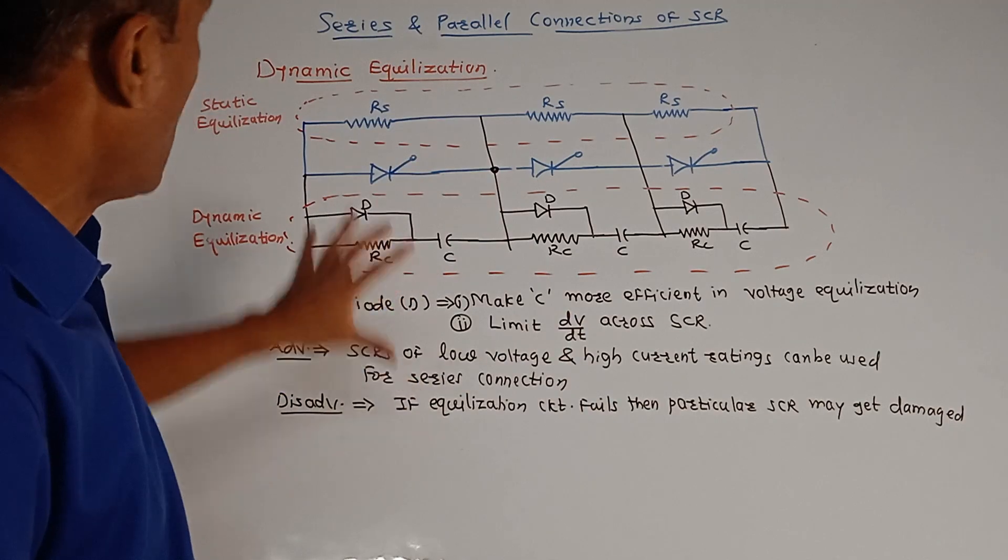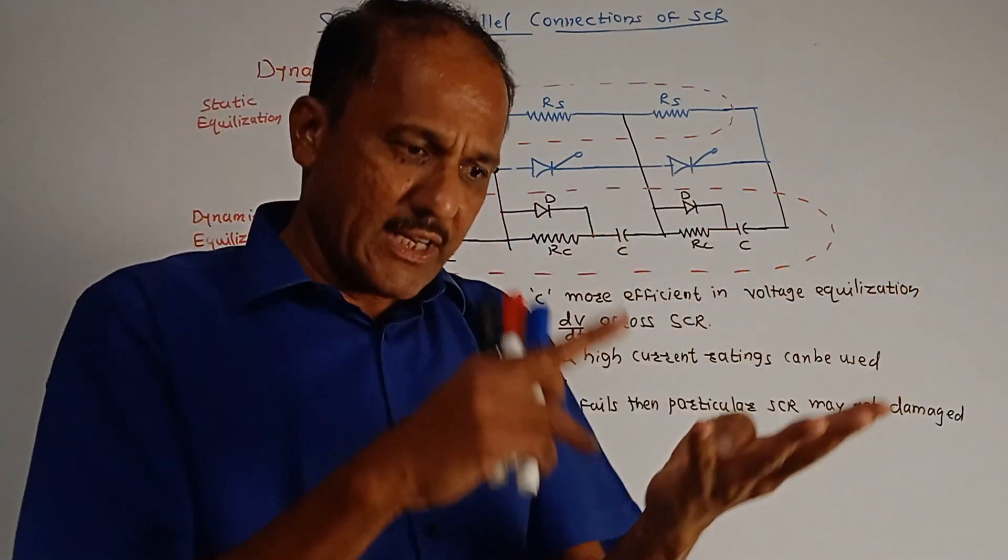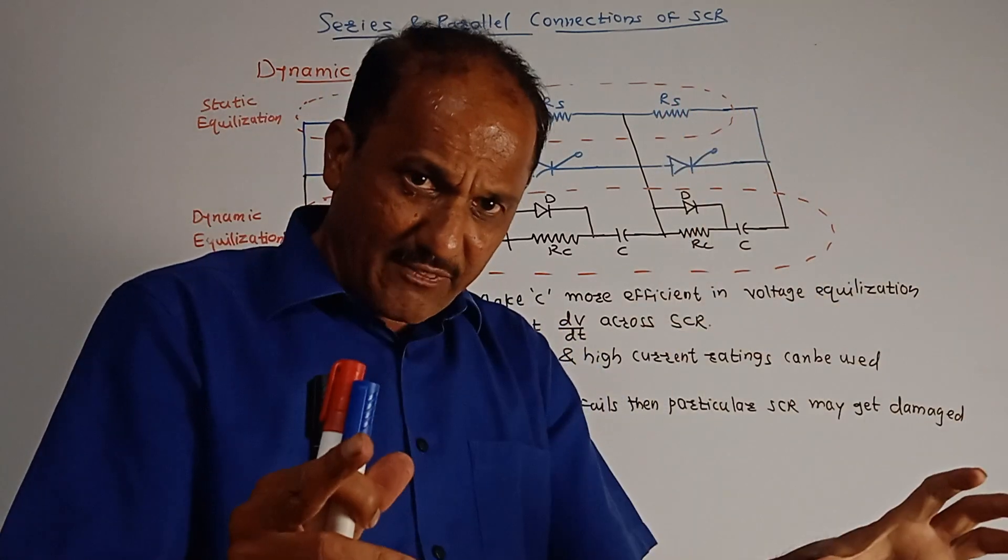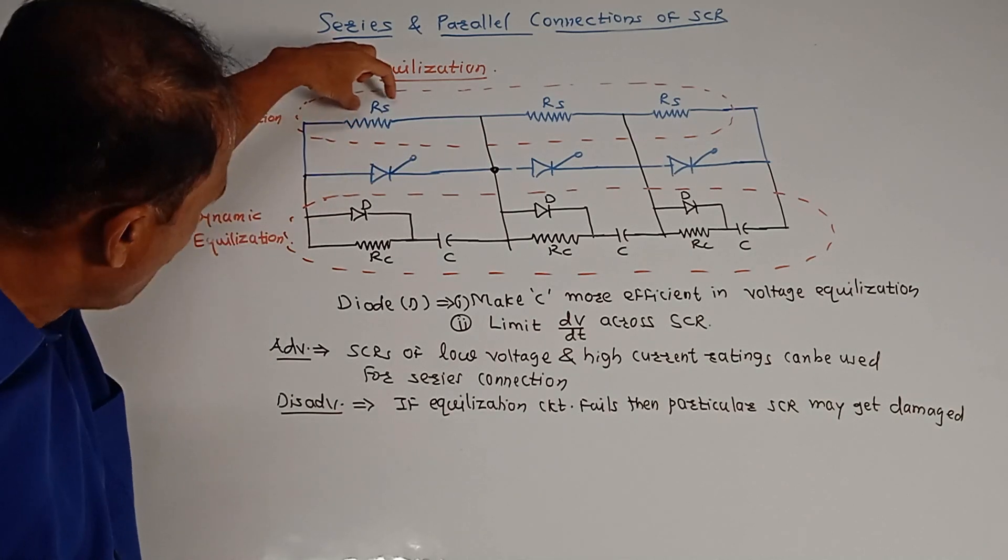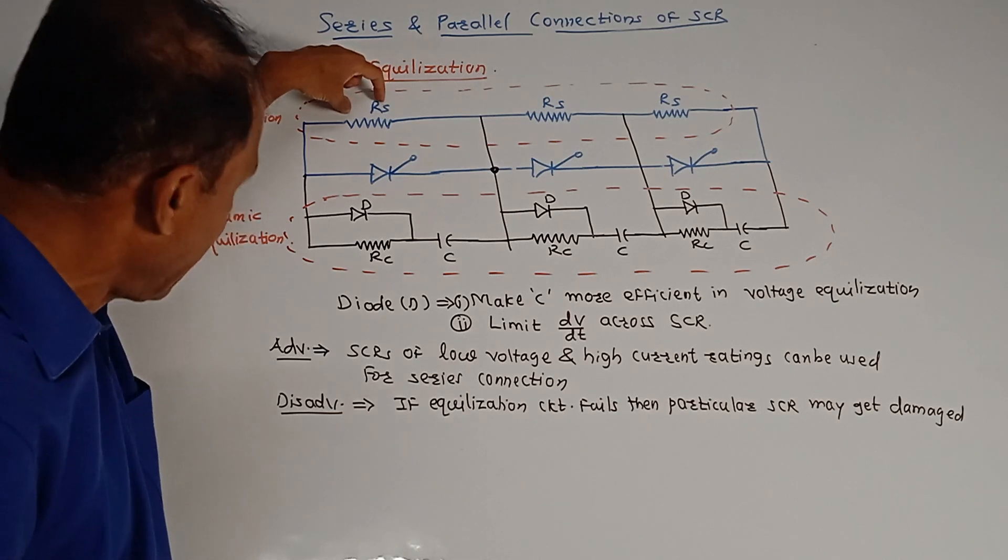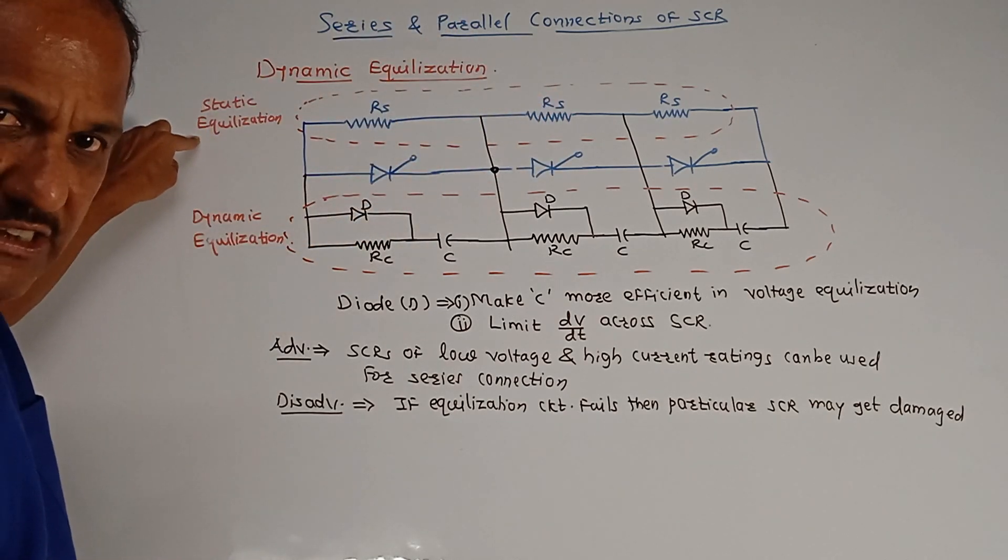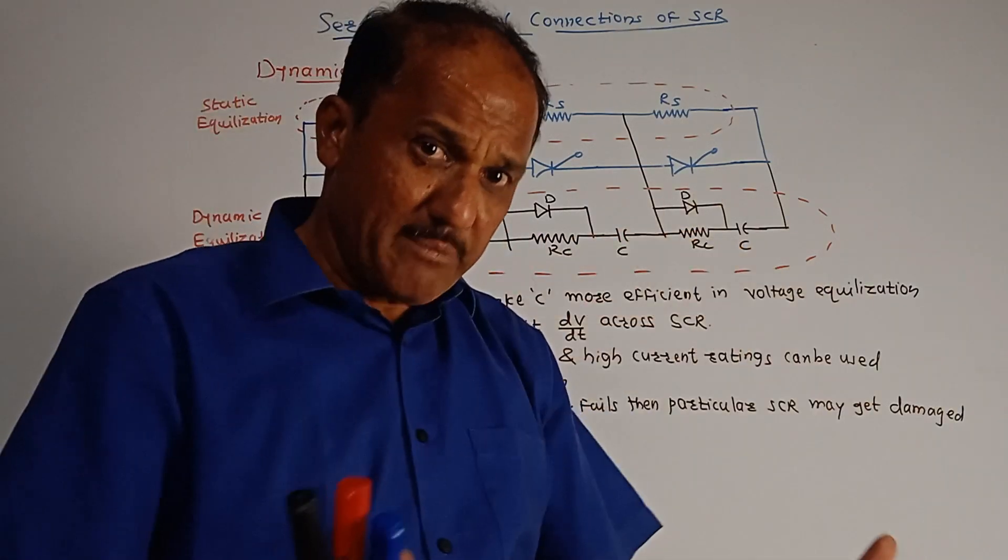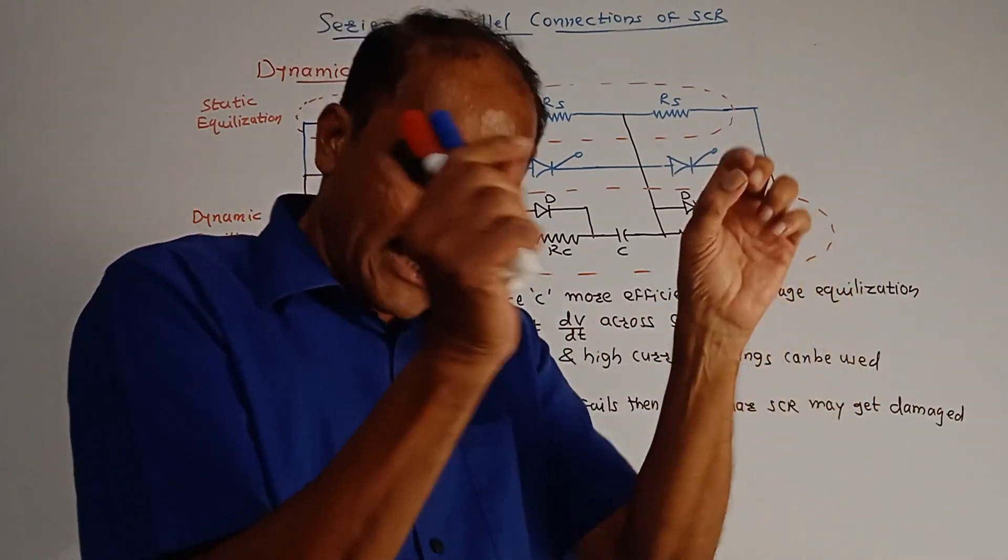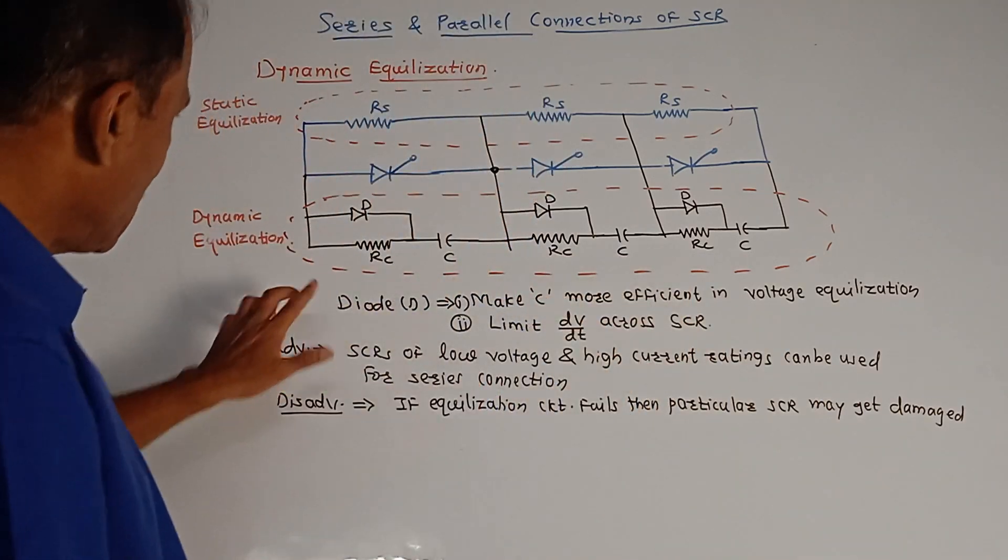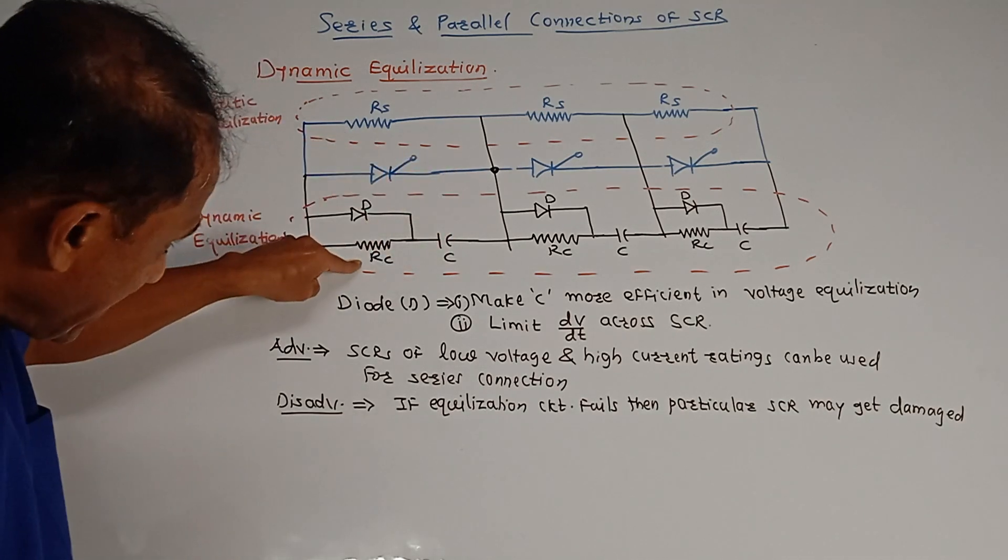This diagram has two diagrams, one is static equalization and another is dynamic equalization. Static equalization already discussed: in parallel with each SCR, we are using a series resistance Rs. I mean this resistance Rs is in parallel with each SCR. So this part gives us the static equalization circuit. To obtain equal voltages across SCRs, the circuit is used which consists of resistance and one capacitor C, with a resistor in parallel.